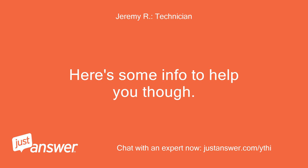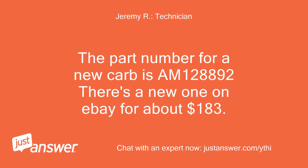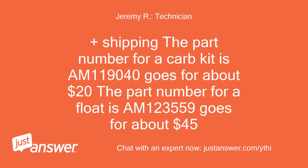Here's some info to help you. The part number for a new carb is AM128892 — there's a new one on eBay for about $183 plus shipping. The part number for a carb kit is AM119040, goes for about $20. The part number for a float is AM123559, goes for about $45.